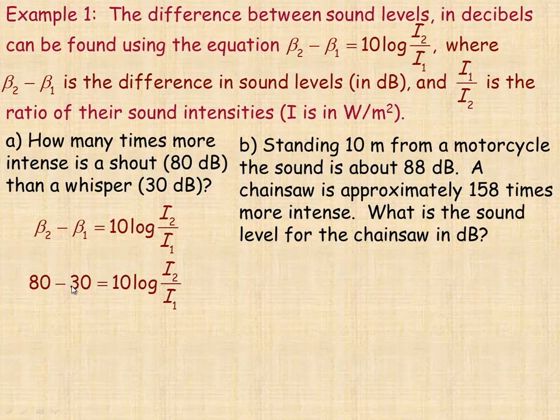And so 80 minus 30 is 50. And then if we divide both sides by 10, that would become a 5 on the left, and it would equal the logarithm of I₂ over I₁. Now all these logarithmic scales we're going to take a look at are base 10. So there's actually a base of 10 here. So 10 raised to the power of 5 equals the ratio of I₂ over I₁.